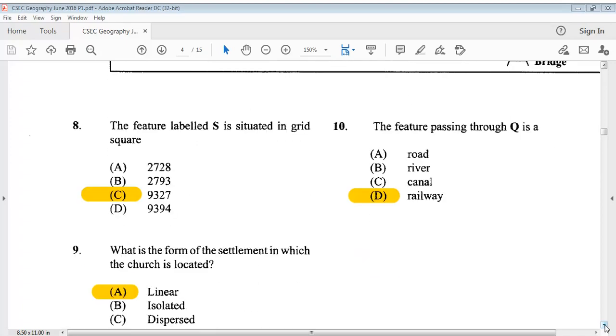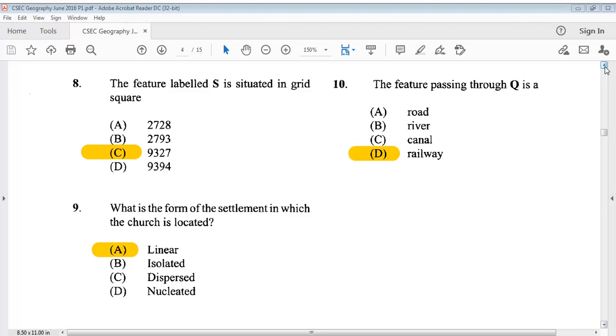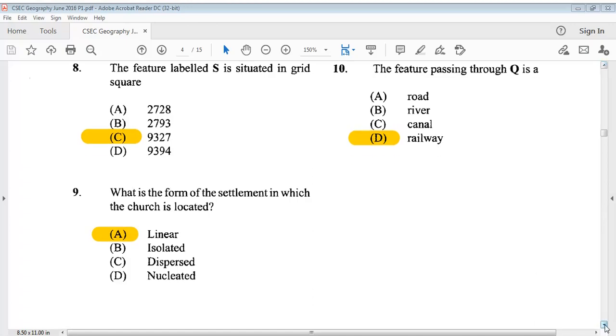The answer is C, 9327. Question 9 says, what is the form of the settlement in which the church is located? The answer is A, linear. Question 10 says, the feature passing through Q is? The answer is D, railway.